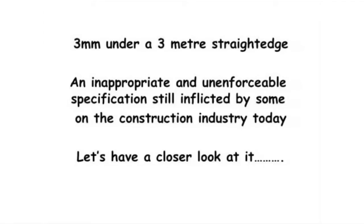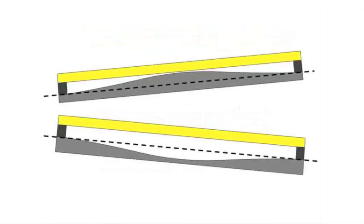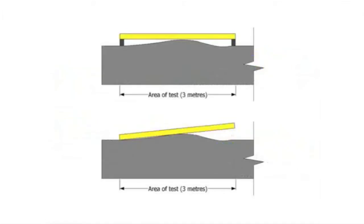But it was all that was around, so let's just have a quick look at it. You're doing a straightedge test — how can it be difficult? It's easy: lay a straightedge on the floor and measure the gap underneath it. So pick one. What's that floor doing? One has a hump and it's on a slope; the other has a valley and it's on a slope. And now we put it on blocks to try and make it make sense.